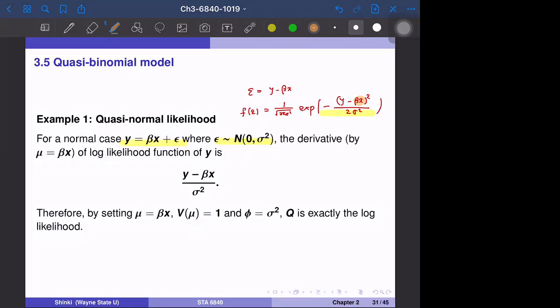This becomes mu becomes just one, and this two comes down, so two over two sigma square. Two cancels, and y minus beta x square becomes y minus beta x. This negative sign cancels with this one. So finally, the log likelihood function of y with respect to mu is y minus beta x over sigma square.